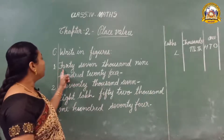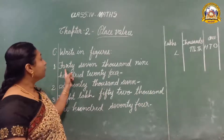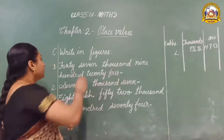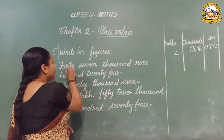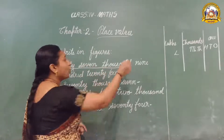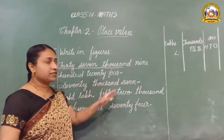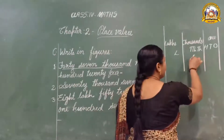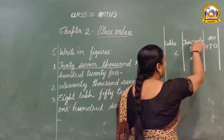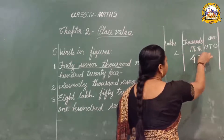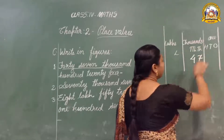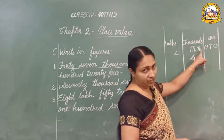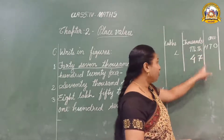First, look here. The number is 47,000. How many thousands are there? 47,000. So under thousands, you can write 47 — meaning 40,000 and 7,000.